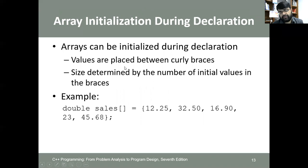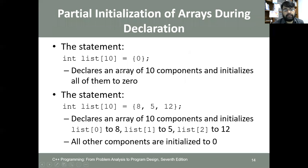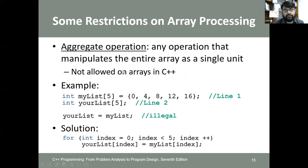Arrays can be initialized during declaration. For example, 'double sales[] = {values}' initializes the array where size is determined by the number of values in the braces. The statement 'int list[10] = {0}' declares an array of 10 components, all initialized to zero. The statement 'int list[10] = {8, 5, 12}' sets the first three elements to 8, 5, and 12, and all remaining components are initialized to zero.